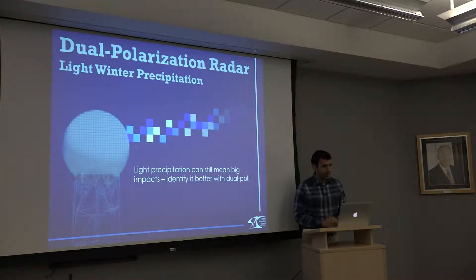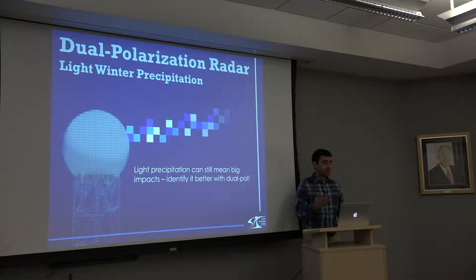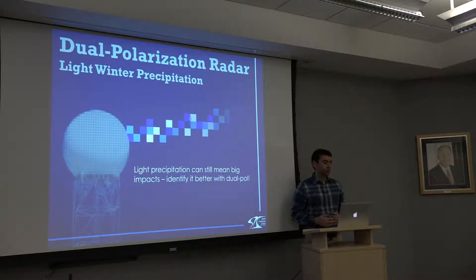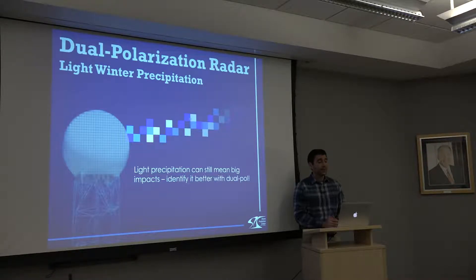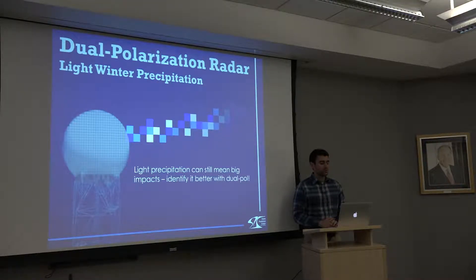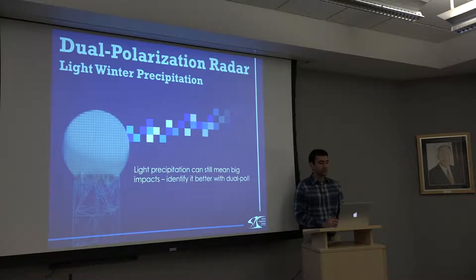The last example we have for the time being — and for anybody watching online, the plan is to produce even more of these as we get more examples and signatures down the line — is simply a light winter precipitation event. This shows the ability of polarimetric or dual-pole data to discriminate different precipitation regimes and give a much better idea of how even a light winter precipitation event is evolving.